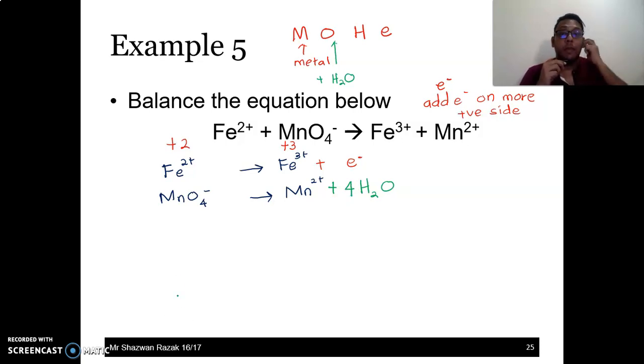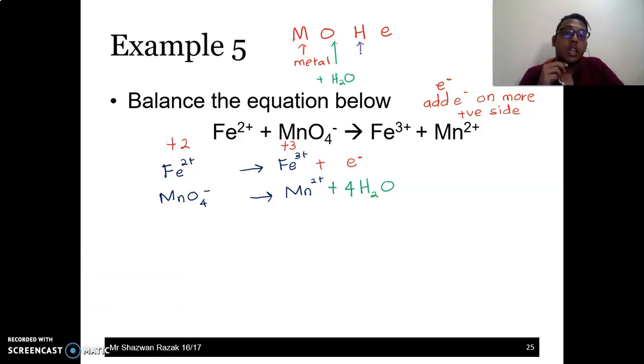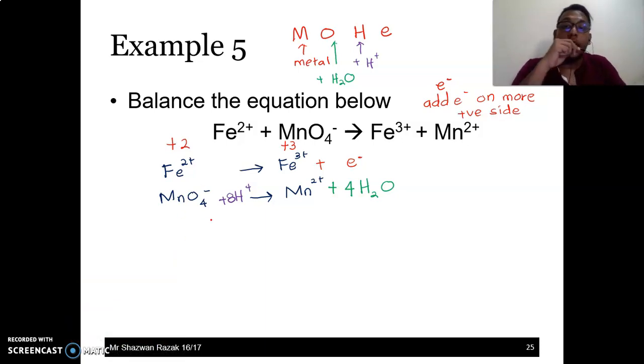Next, we balance hydrogen. Left side. There is no hydrogen. Here there are 8 hydrogens. When you want to balance hydrogen, what you need to do is add H⁺. H⁺ is a species with positive 1 charge. Here there are 8. So 8 H⁺.